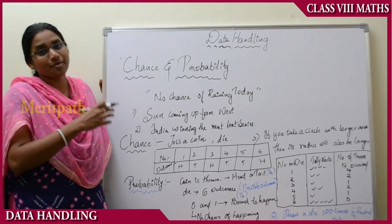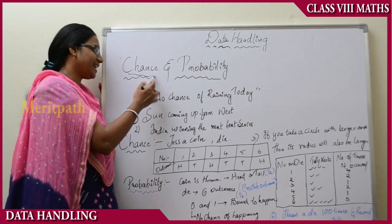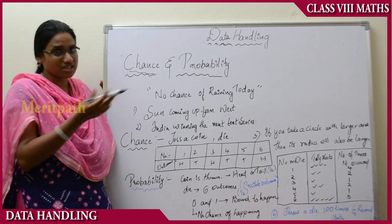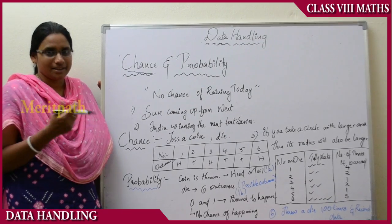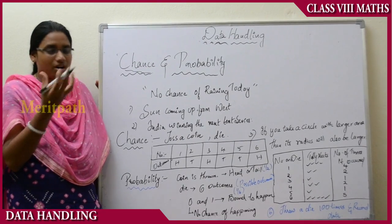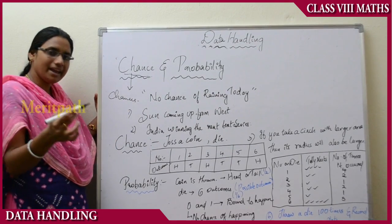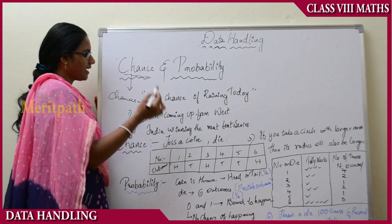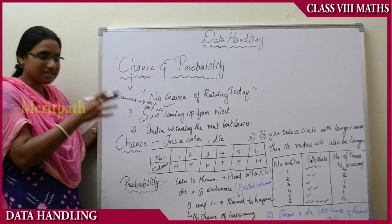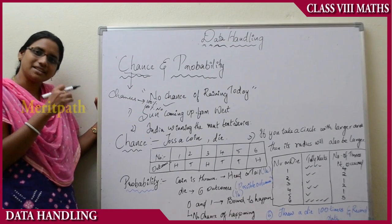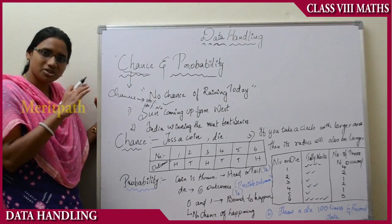Let us see the terms chance and probability. You will have heard the word chance: 'there might be a chance to win' or 'there is no chance of rain today' or 'there is a chance for India to win.' These hopes, assumptions, or feelings are known as chances. There might be 100% yes or 100% no — we can't say 100% it will happen. For example, the sun rises in the east — that is a universal truth, for sure.